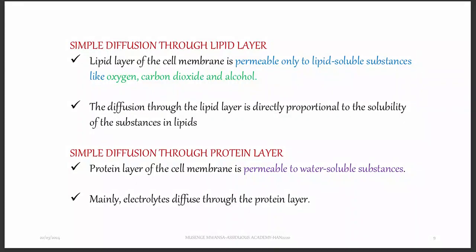For simple diffusion through the lipid layer, the only molecules that can pass are those which are also lipids or hydrophobic — they don't love water. Something that does not love water is going to love lipids, so we call it lipophilic. For molecules to pass through the lipid layer by simple diffusion, they should be able to dissolve in lipids. Examples include oxygen, carbon dioxide, and alcohol — these molecules will just cross the cell membrane without assistance.